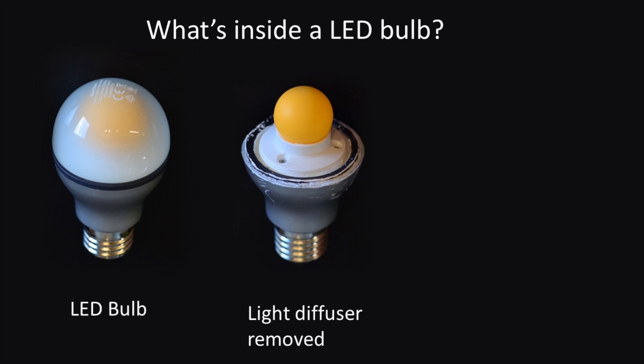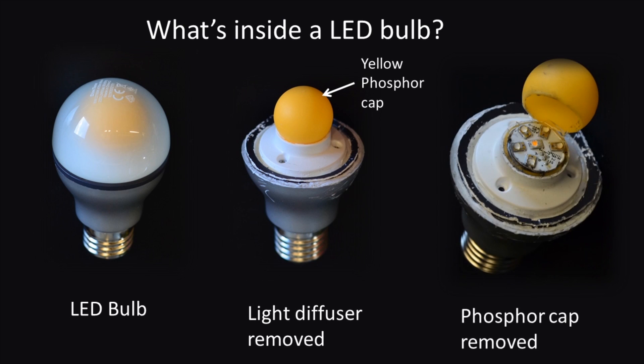And we can see what looks a bit like a yellow ping pong ball. That's actually a yellow phosphor and if we lift that off we can see the LEDs themselves underneath that phosphor cap. There are several LEDs here and they're on a PCB or printed circuit board.